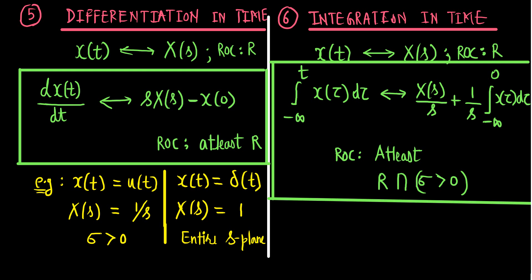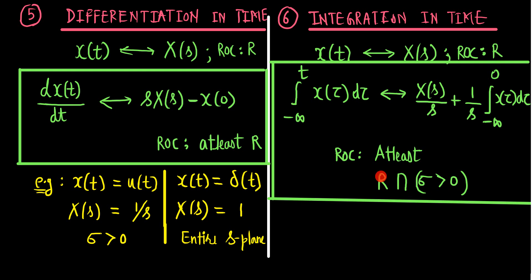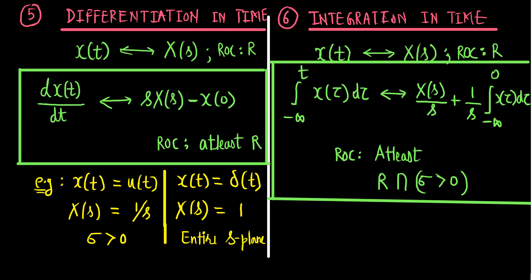The ROC means that if the original ROC is R, then the ROC of the integrated signal is at least the intersection of R and {sigma > 0}. This property holds true for right-hand-sided signals — those that are 0 for t < 0, like u(t), which has ROC sigma > 0. Integrating such a signal gives a ROC that is the intersection of sigma > 0 and the original ROC.